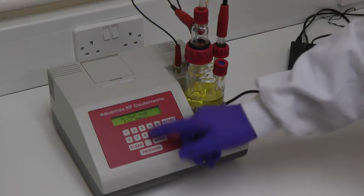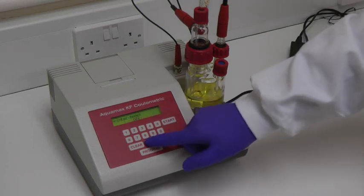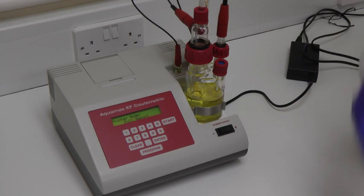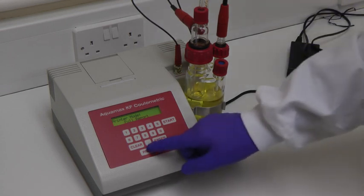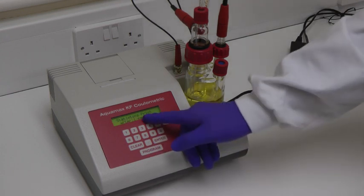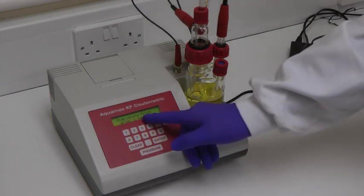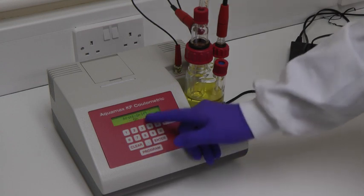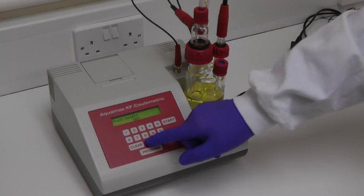The Printer Mode parameter gives options for Off, for printing every result, or for a full report including time, date, sample number, instrument serial number, and so forth. The Statistics Print parameter will print statistical data from a series of up to 99 results. The Background Drift Print option may be either on or off.